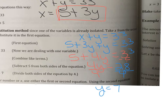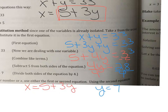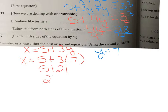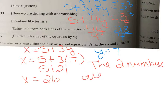Y equals seven is one of the numbers. Now we need to find X. Going back to the isolated equation: X equals five plus three Y. Substituting Y equals seven: X equals five plus three times seven, which is five plus 21, which equals 26. In a complete sentence: the two numbers are 26 and seven.